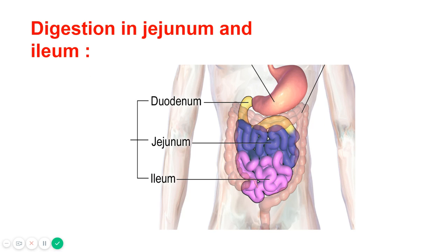Now let's see digestion in the jejunum. The jejunum is the second portion of the small intestine, running from the duodenum to the ileum, and it is about 2.4 meters long. The lower three-fifths of the small intestine is the ileum. Food which escapes undigested from the duodenum is completely digested in the jejunum and ileum by enzymes contained in the intestinal juice.